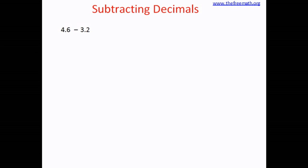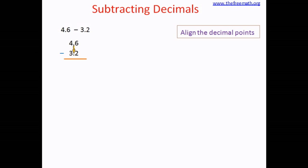The first rule is to write the decimal numbers in such a manner that the decimal points line up — that means they are aligned. Write the decimal numbers exactly one below the other. I've drawn a yellow arrow to show that the decimal points are aligned; when you actually do the subtraction you do not need to draw any arrow. Once we write the decimal numbers exactly below each other, the next step is to forget that there is any decimal point and subtract normally.